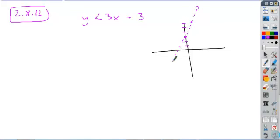I'm going to use a dashed line because there's no equal to. And then all you need to do here is figure out where it's going to be shaded.